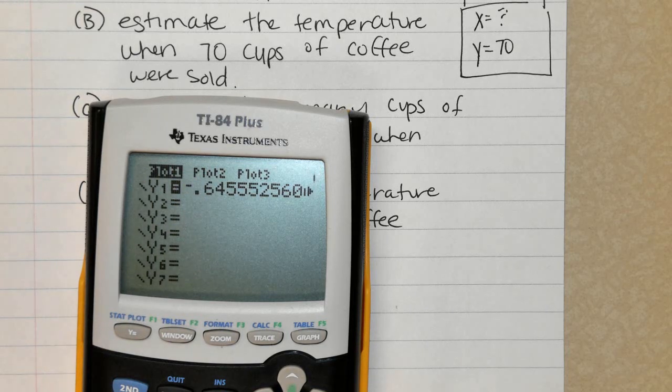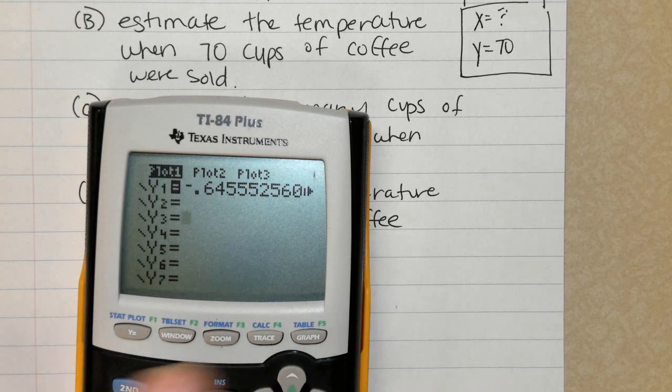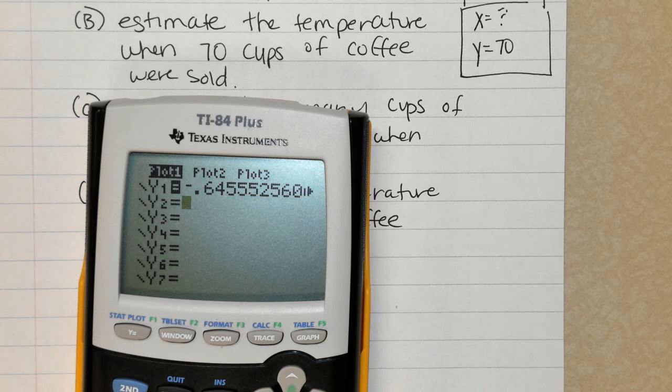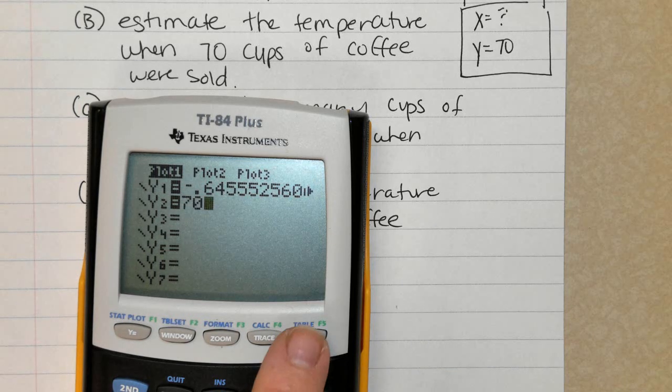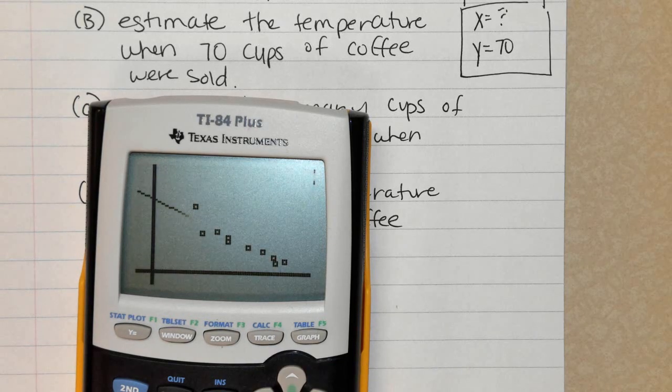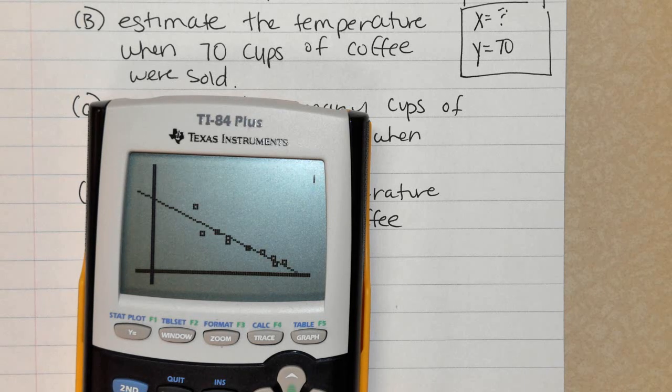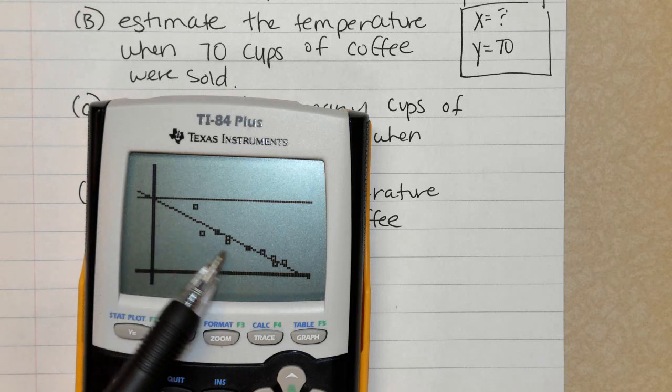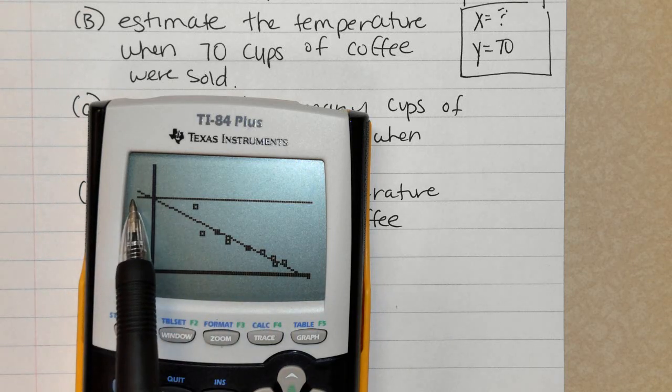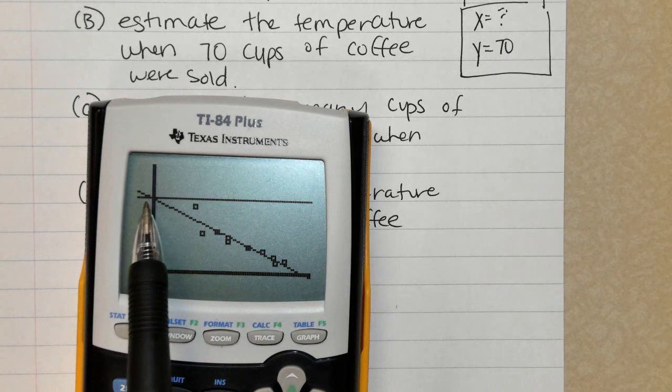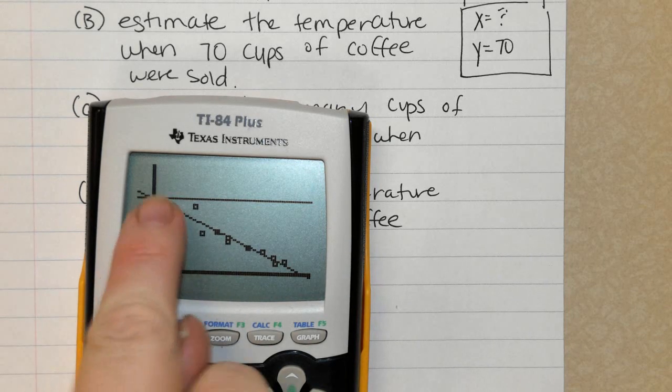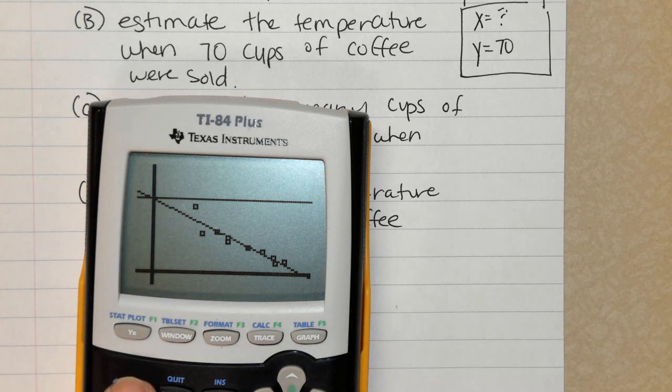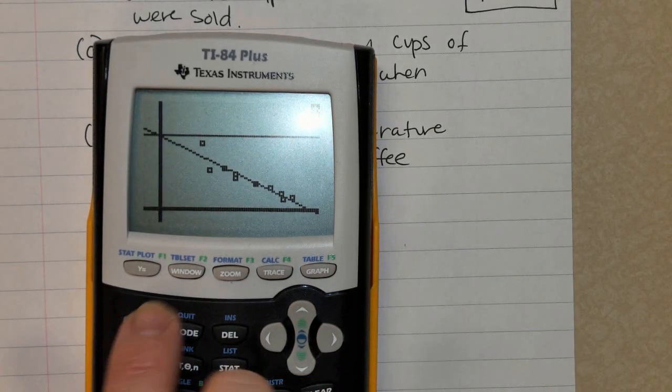Go up to y equals and go to y sub 2. Type in that value of y, which happens to be 70, and hit graph. We want to find out where do they intersect, and they intersect right there. I want to find out exactly where they intersect. So here's the line of best fit, and here's the horizontal line where y equals 70. I want to know where do they intersect. So to figure out that exact point, hit the second key, which again is blue, and hit trace.